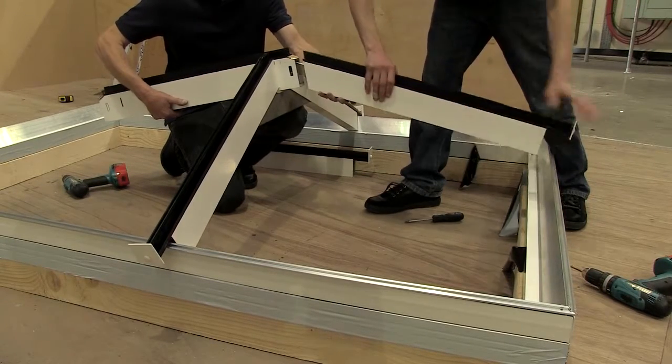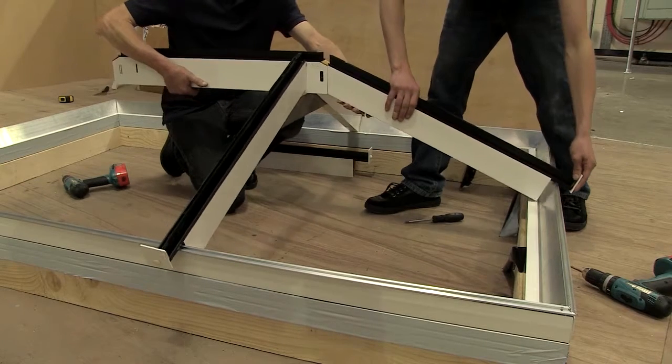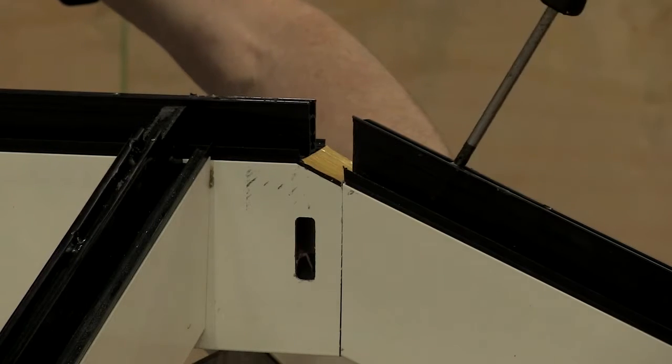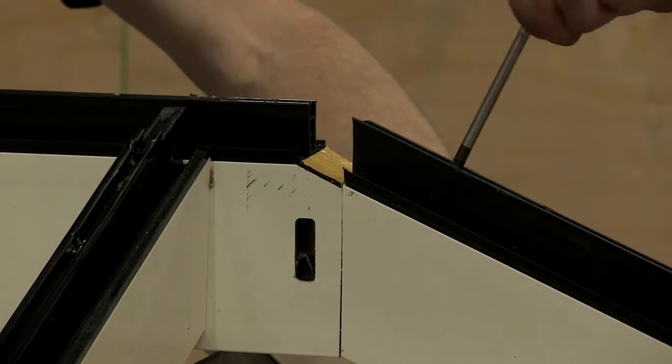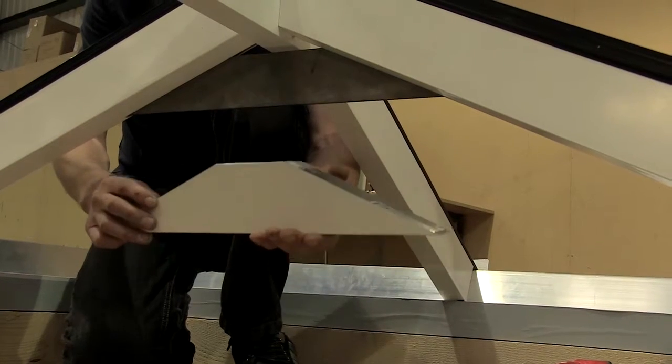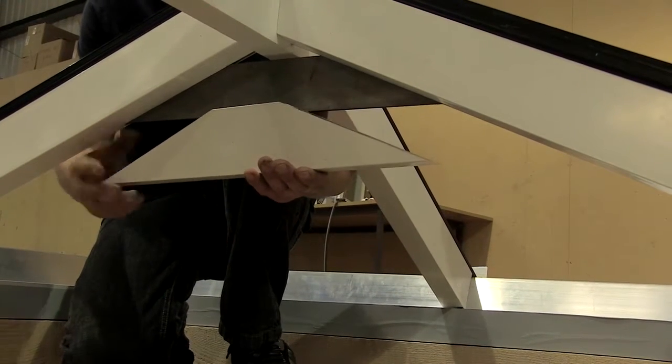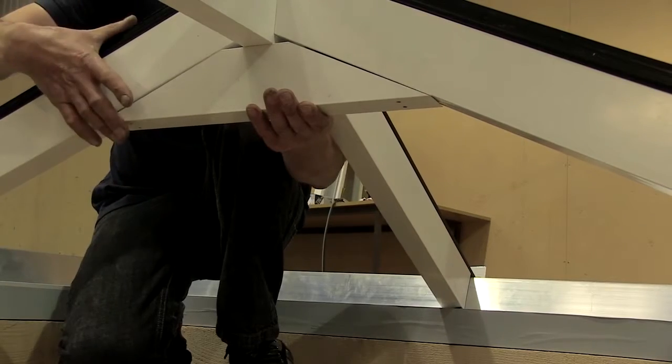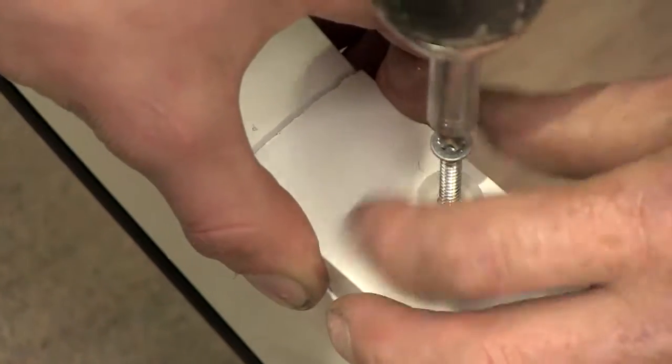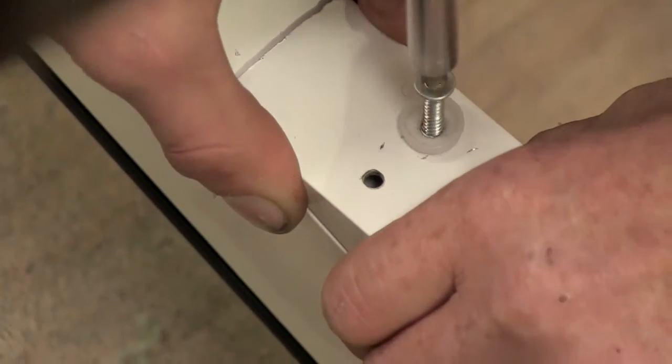Slide the bell rafter over the pre-fixed ridge bracket. Tighten pre-fixed screw to secure the bell rafter. Cover the steel tie bar bracket with the gusset cover. Fix the gusset with screws provided and cover with screw cover caps.